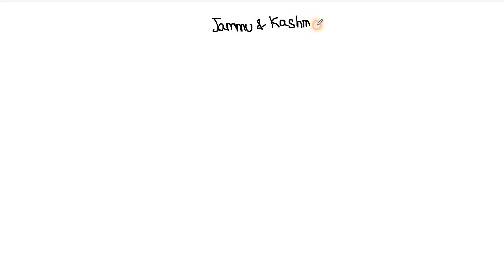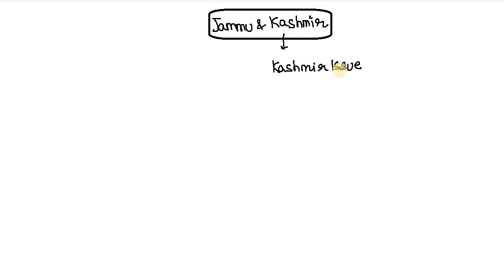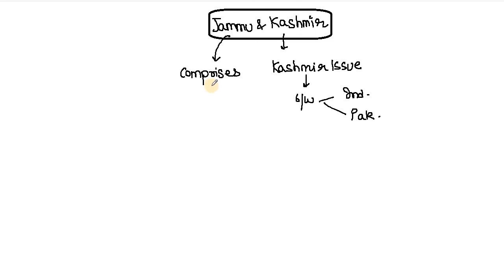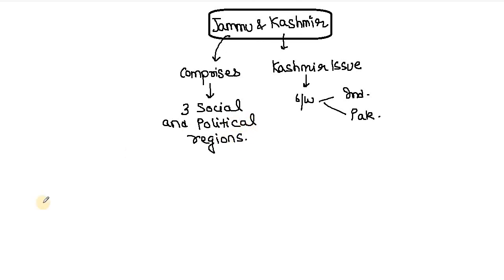Now let us take the example of Jammu and Kashmir. The Kashmir issue is always in the news. Jammu and Kashmir comprises three kinds of social and political regions. Jammu is a mix of foothills and plains. When we look at the geography, you will find the foothills and plain areas there. Whenever there are distinct political regions involved, conflict increases.